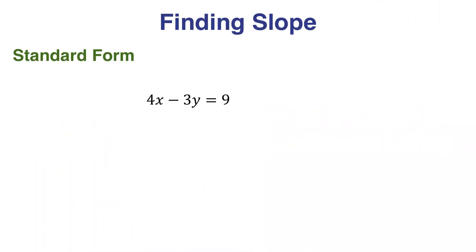Here we are given 4x minus 3y equals 9. We want to identify the slope of this line so we can find some parallel and perpendicular lines. It's not easy to look at this equation and identify the slope.